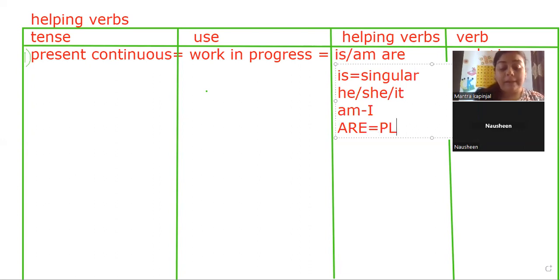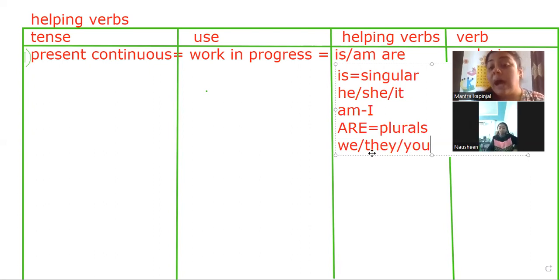Are we use with plurals: we, they, and you. Examples: You are going to the temple. You are doing my work.